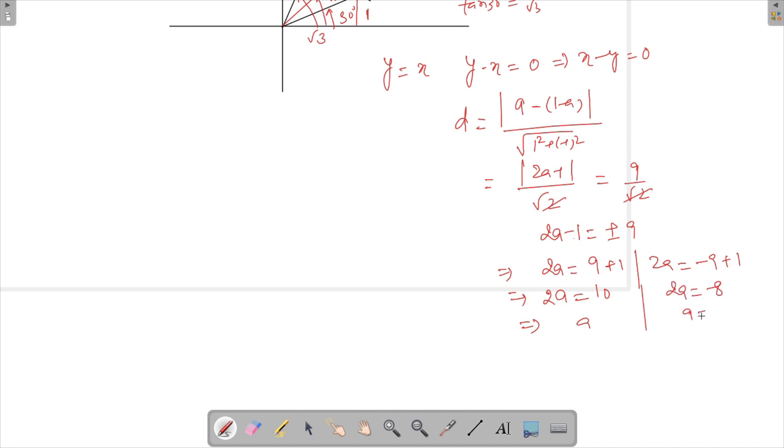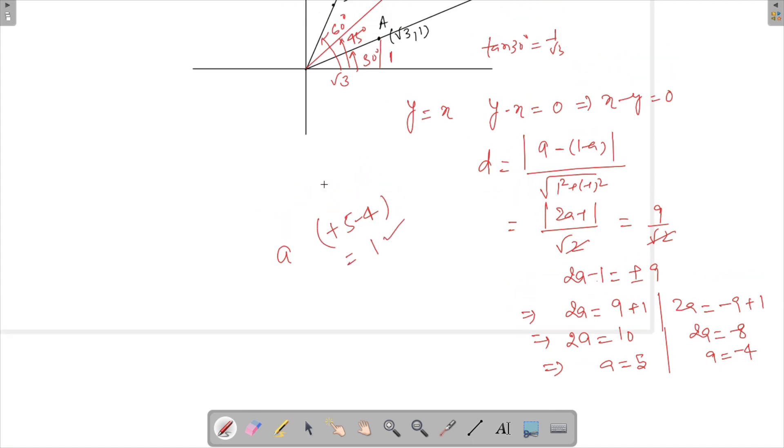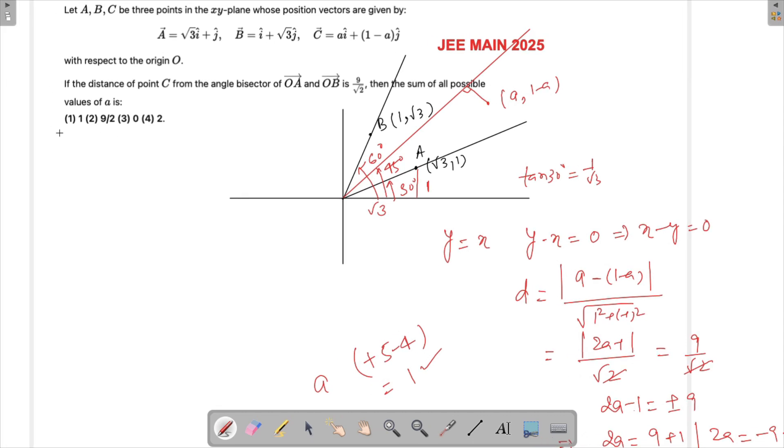So if you look at these two, sum of these two, a has two values which will be plus 5 minus 4, and which will come out to be 1. So that is your answer here, so plus 5 minus 4 which is 1, and that is option number 1. So this question can be solved.